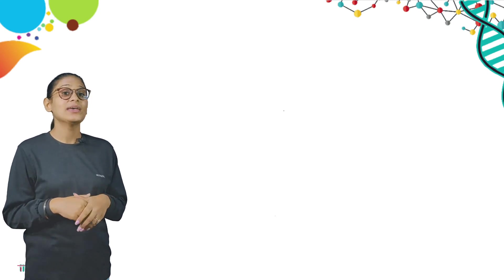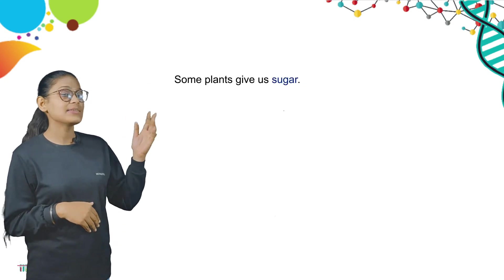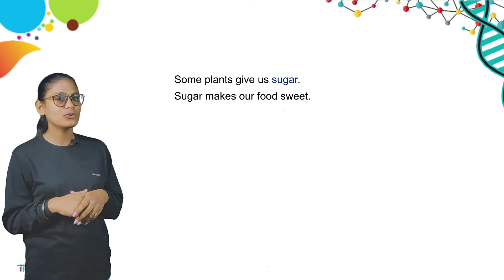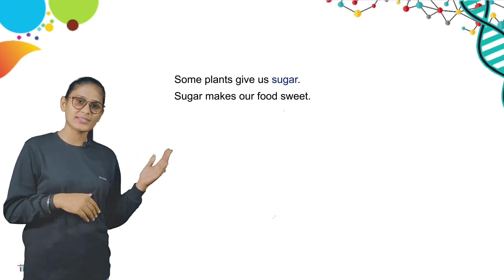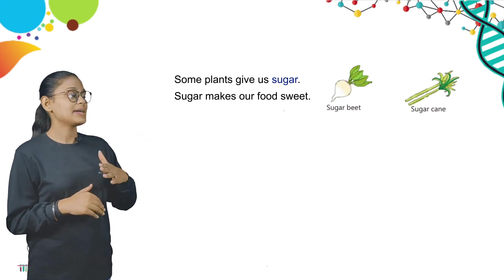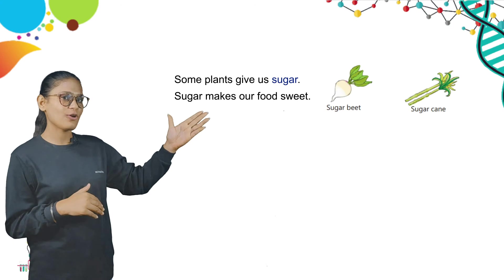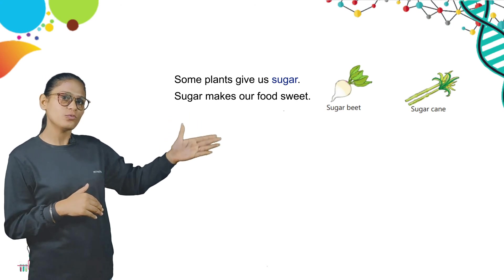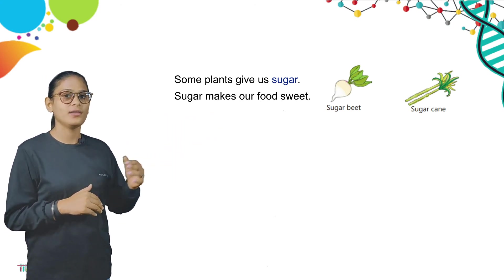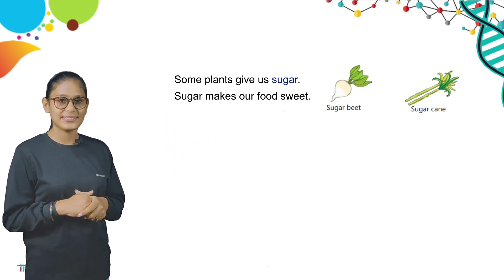Now we discuss about sweets. Some plants give us sugar. Sugar makes our food sweet. Look at the pictures — there are some examples like sugar beet and sugar cane.